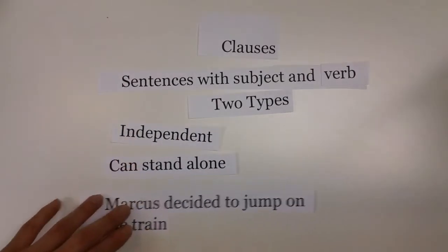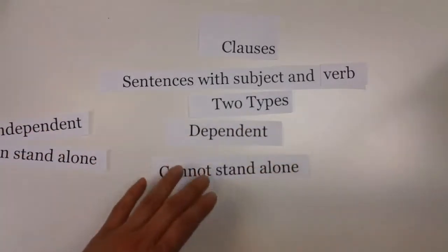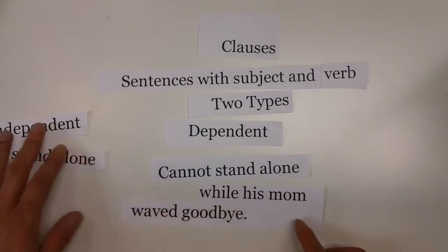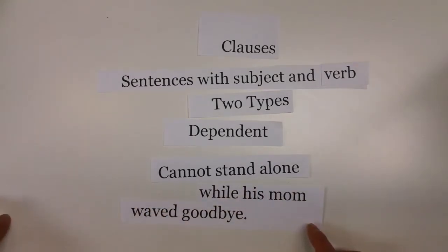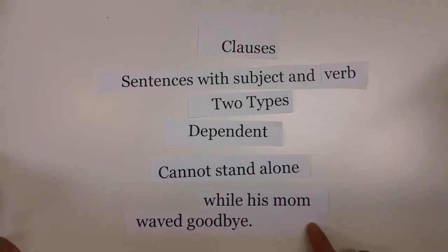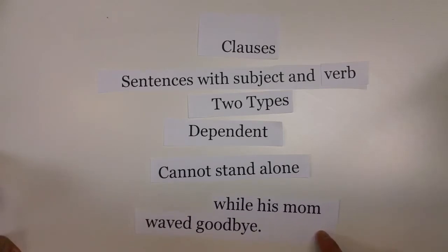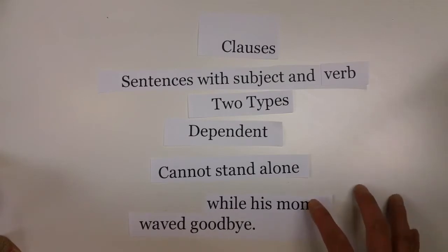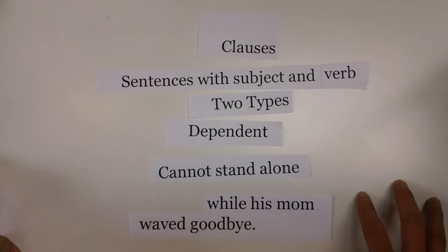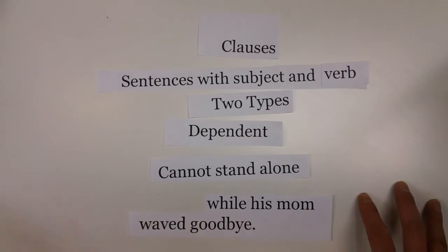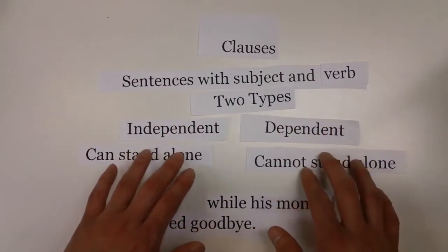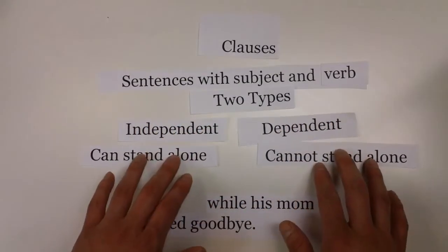A dependent clause, however, would be something like "while his mom waved goodbye." This sentence can't stand by itself. If I just came up to you and said, "while his mom waved goodbye," you'd be like, "What are you talking about? That doesn't quite make sense." So what we need is an independent clause paired with a dependent clause.